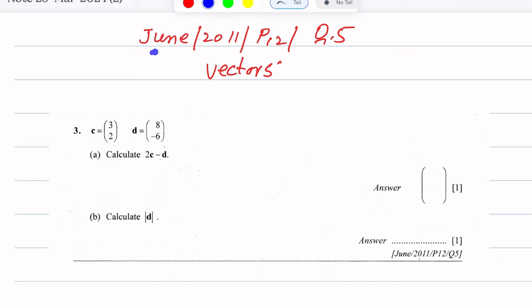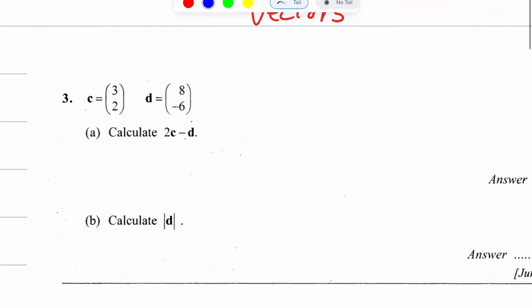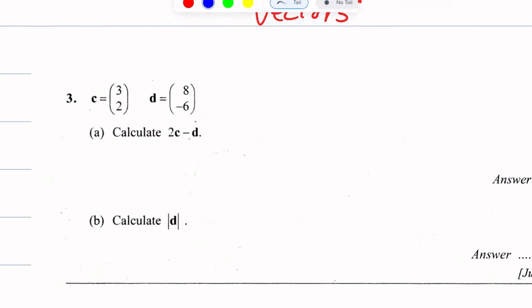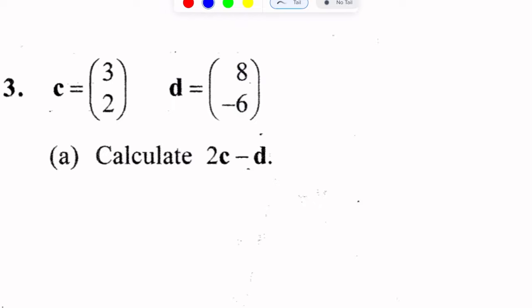This question is from June 2011, Paper 1, Question Number 5. This question is of vectors. Vector c is given as (3, 2) in column matrix form, and vector d is (8, -6).